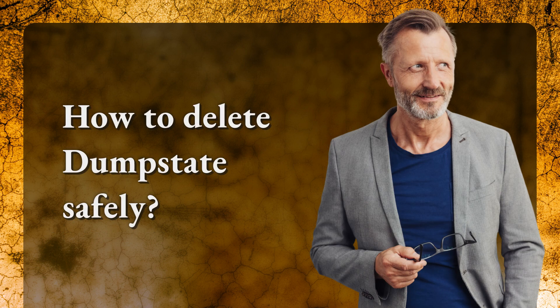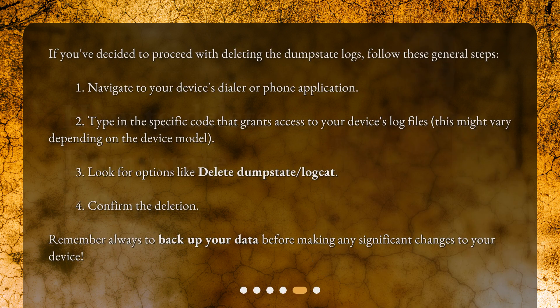How to delete dump states safely? If you've decided to proceed with deleting the dump state logs, follow these general steps. 1. Navigate to your device's dialer or phone application. 2. Type in the specific code that grants access to your device's log files — this might vary depending on the device model. 3. Look for options like delete dump state or logcat. 4. Confirm the deletion. Remember, always back up your data before making any significant changes to your device.